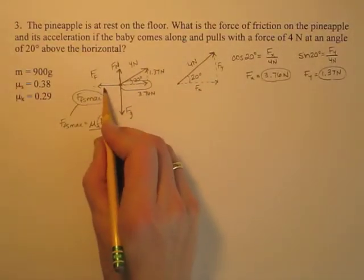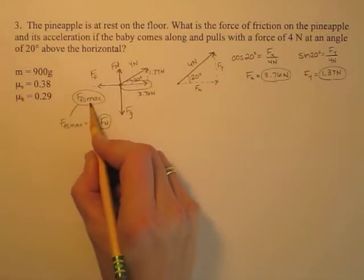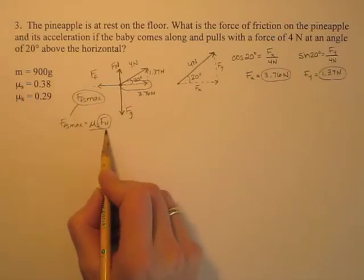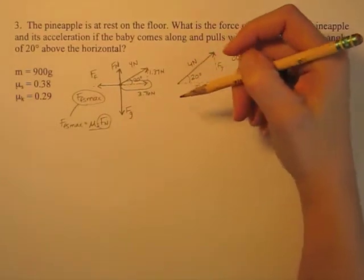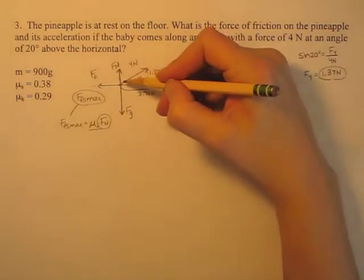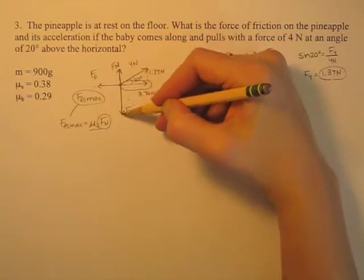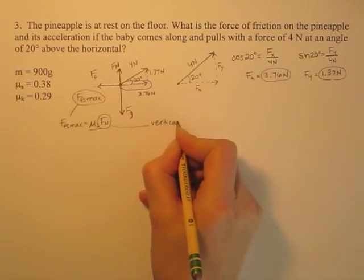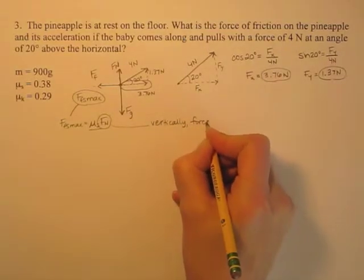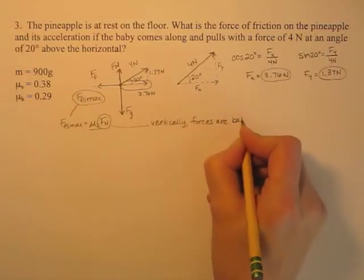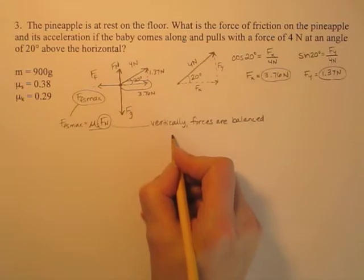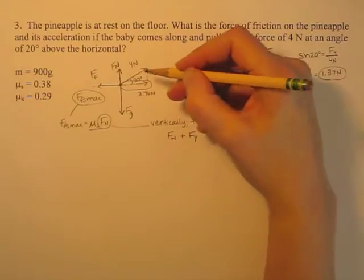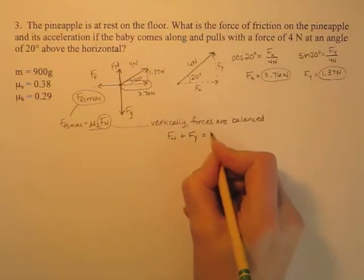Now I need to find what the maximum force of static friction can be, and to do that I need to know the normal force. The normal force is a vertical force, and vertically the forces are balanced. So vertically, forces are balanced. All the upward forces — which would be the normal force Fn plus the vertical component of the baby's force Fy — have to equal the downward force of gravity.